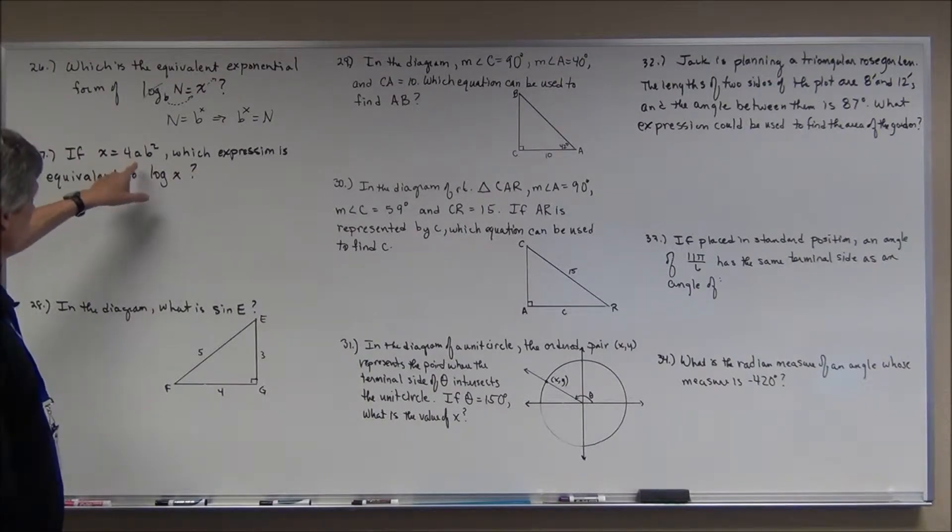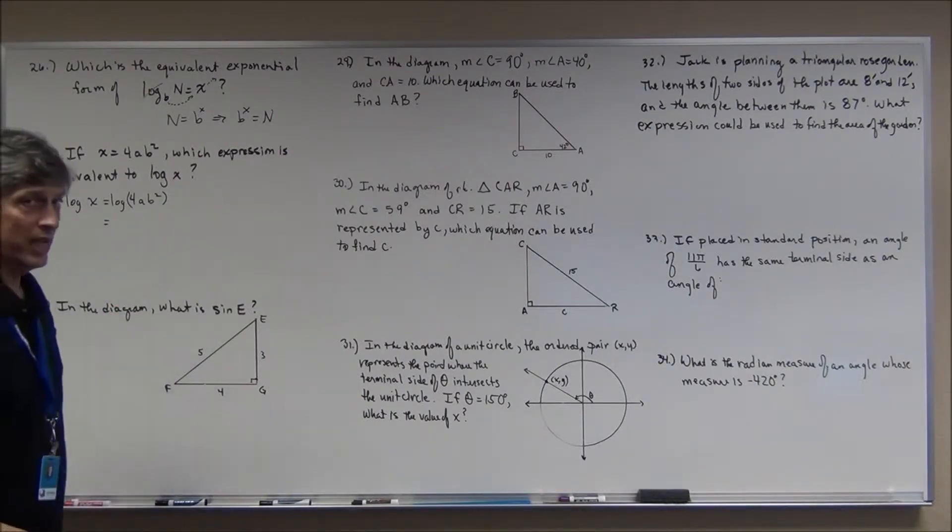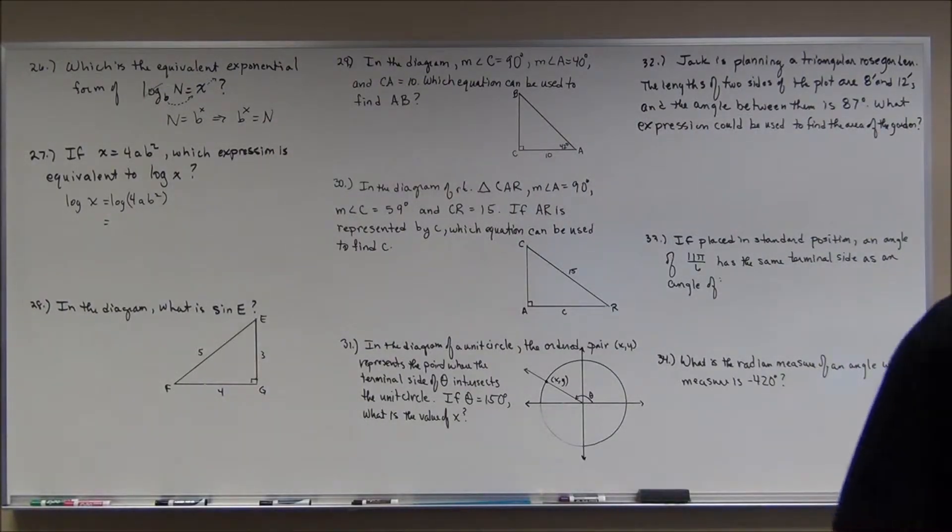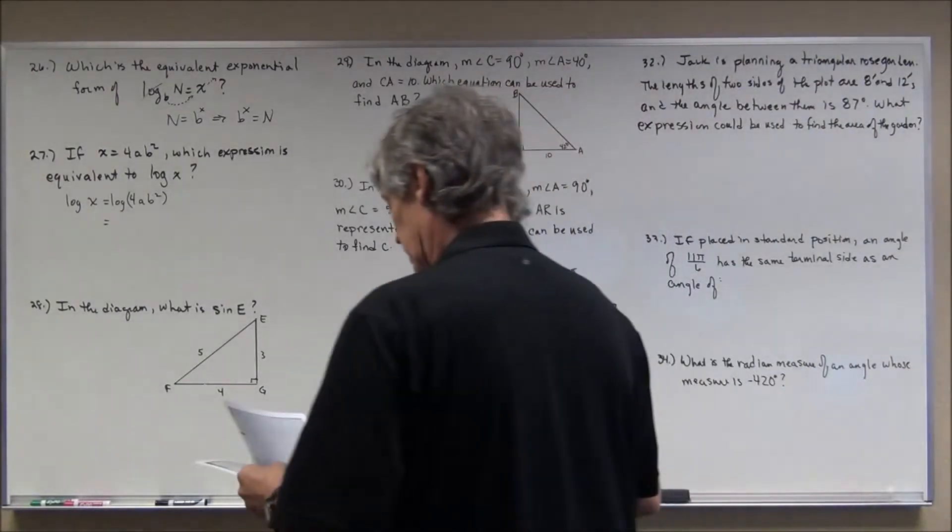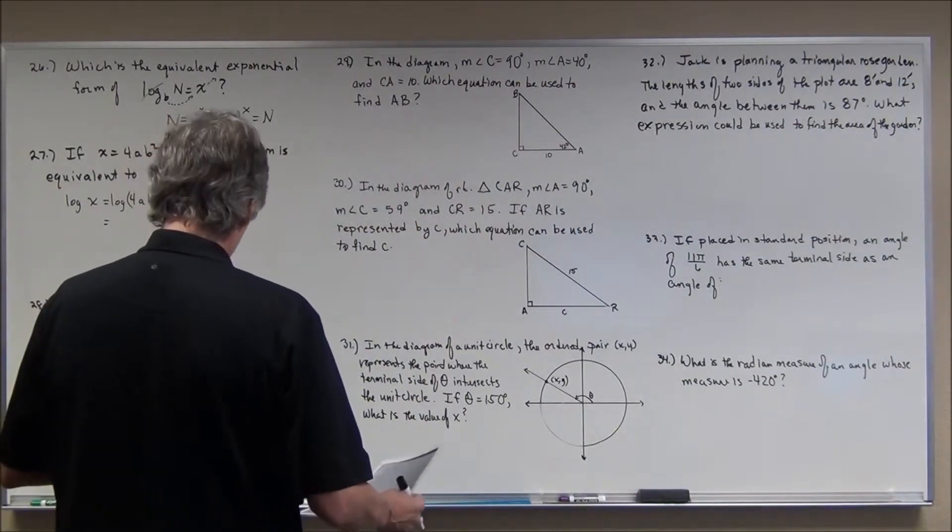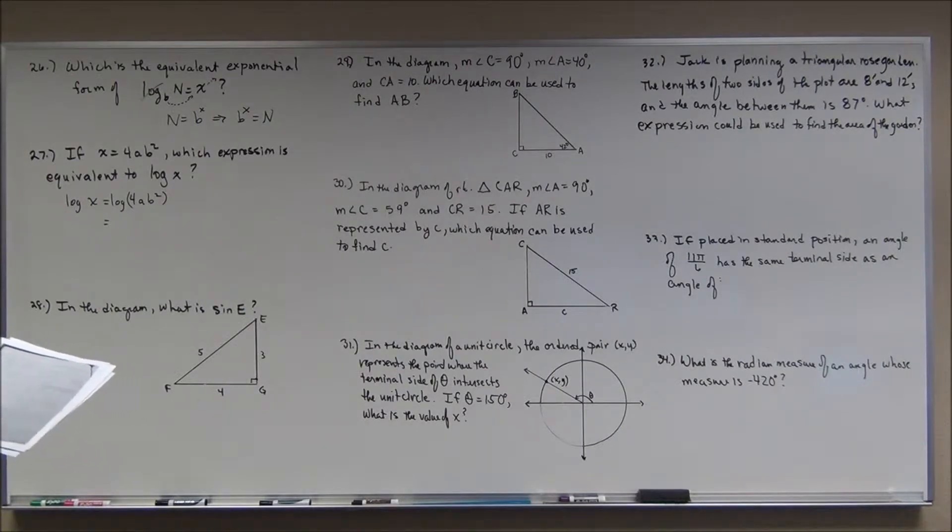This one's got a little bit of a bite to it because you have to use those properties that I had written down in the previous video. It says if x equals 4ab squared, which expression is equivalent to the log of x? So you have x is equal to 4ab squared. They want to know what the log of x is equivalent to. And that's exactly what's happened. You can see that they've expanded it. There's some plus signs, some minus signs, and such.